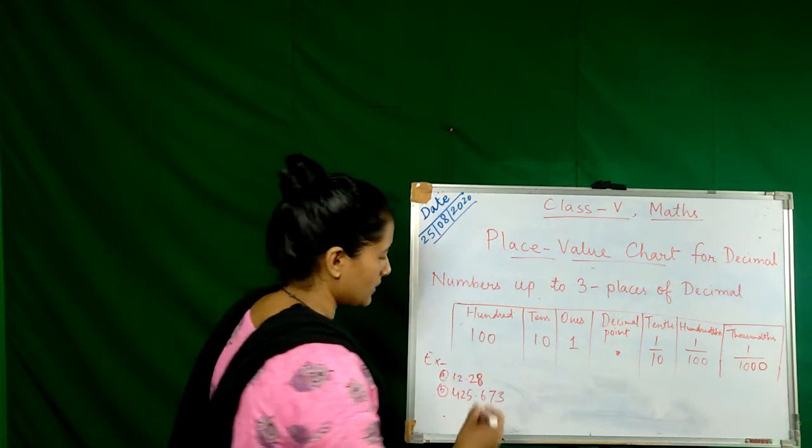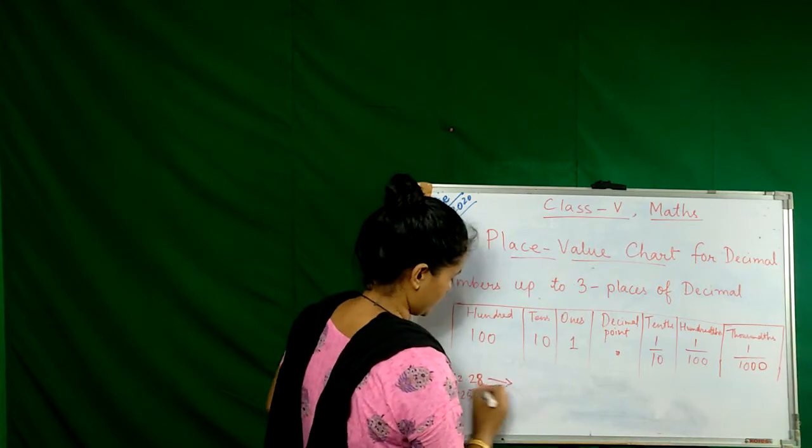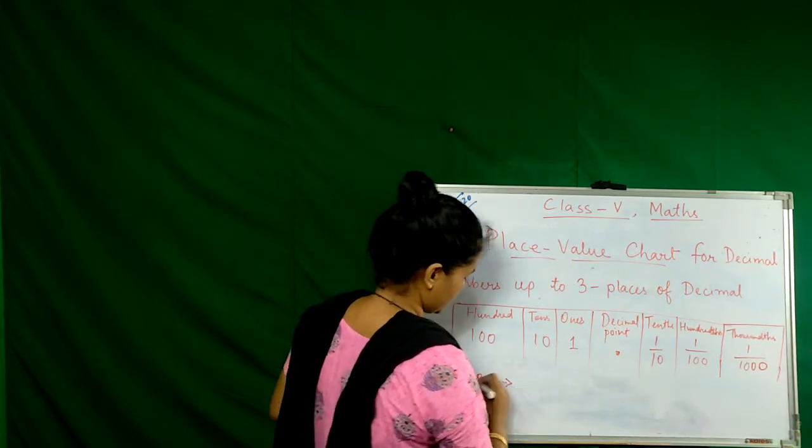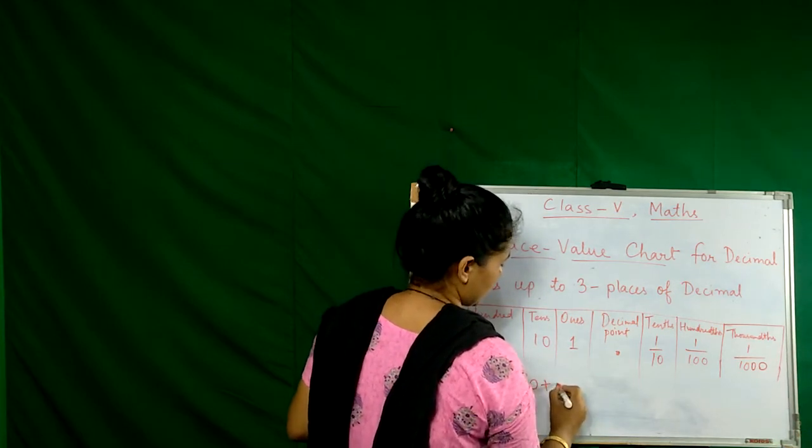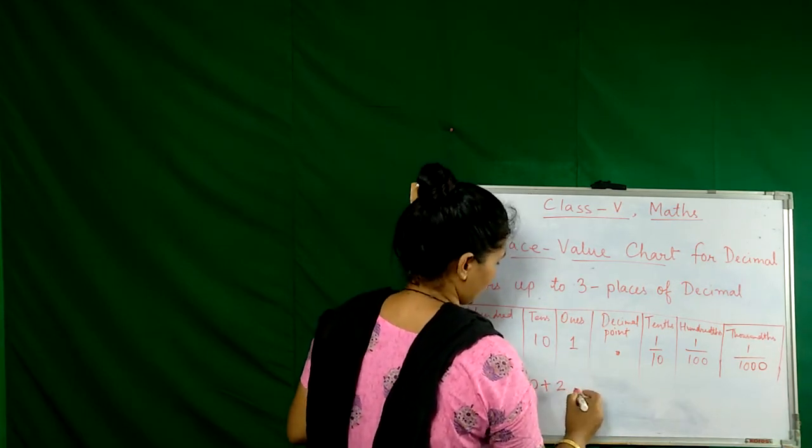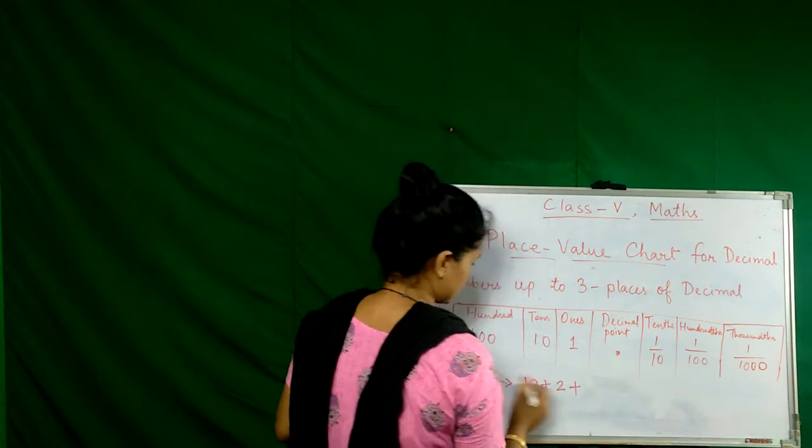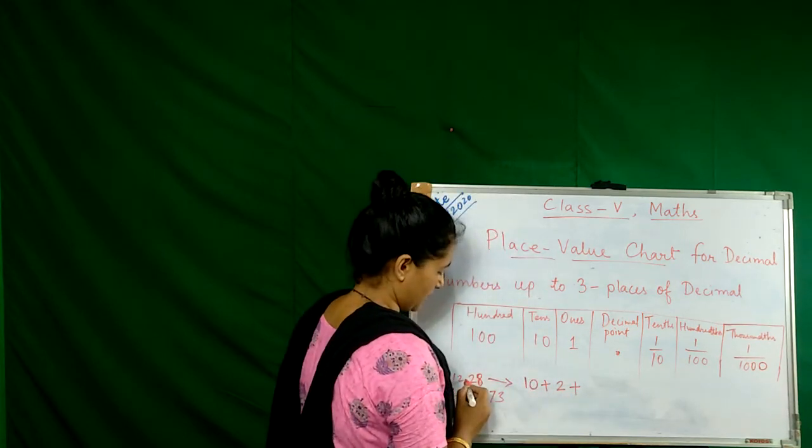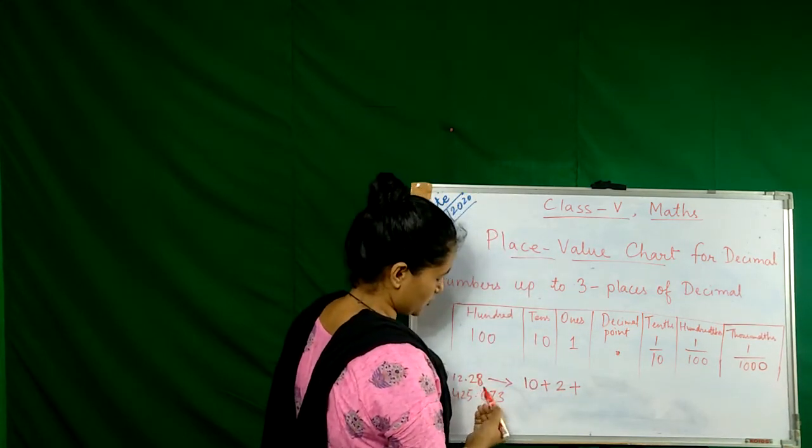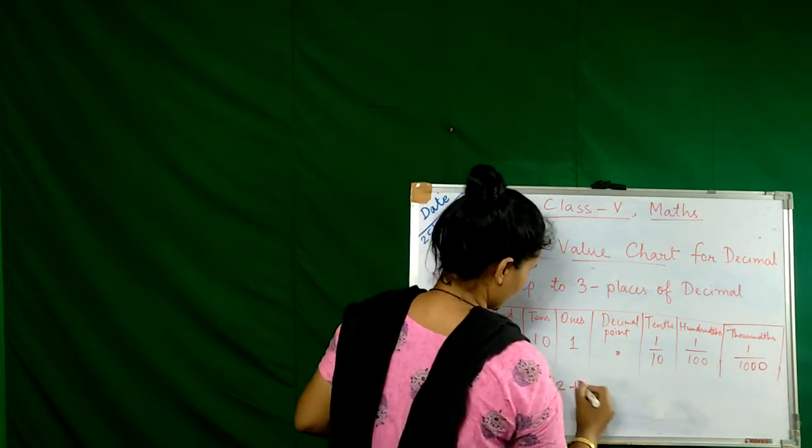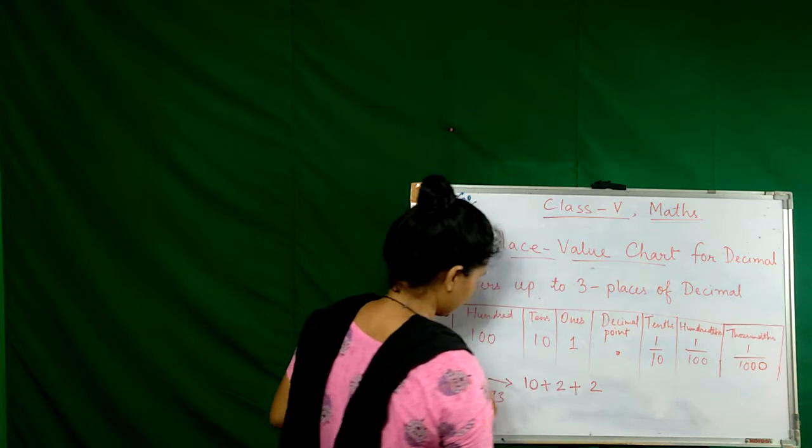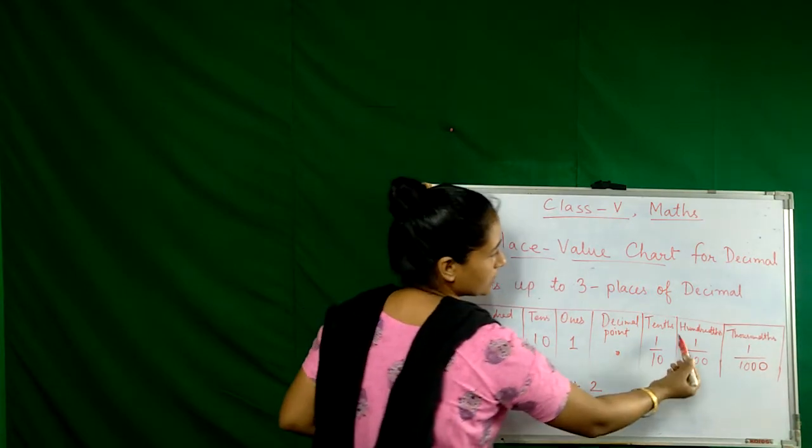We are going to solve the first example. This is 12. We have to write here ten plus two, and then after this decimal, two digits is here. So we have to write after decimal, two as numerator, denominator ten. This formula we use.